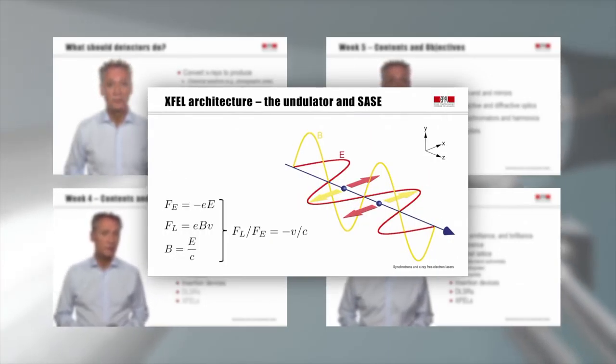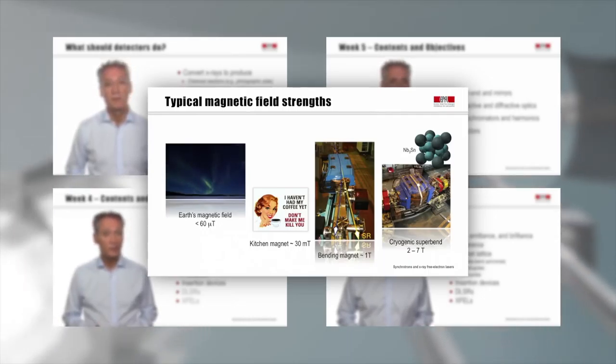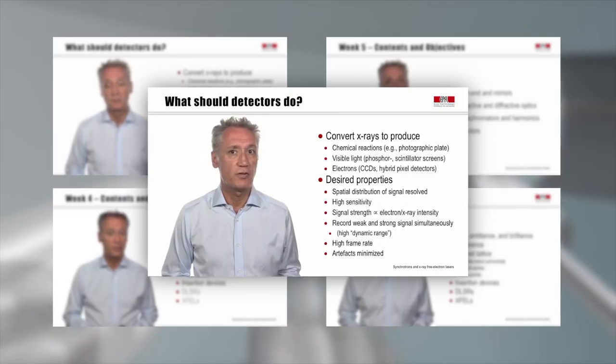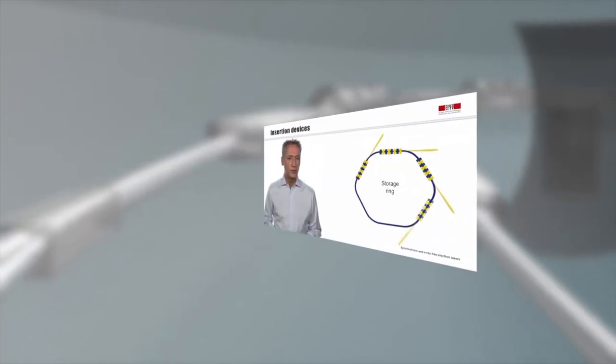Synchrotrons are exceedingly bright sources of ultraviolet and X-radiation. In terms of their brightness, modern synchrotrons are to laboratory-based sources what modern computers are to the Colossus valve-based computer used to crack the Enigma code in 1943.